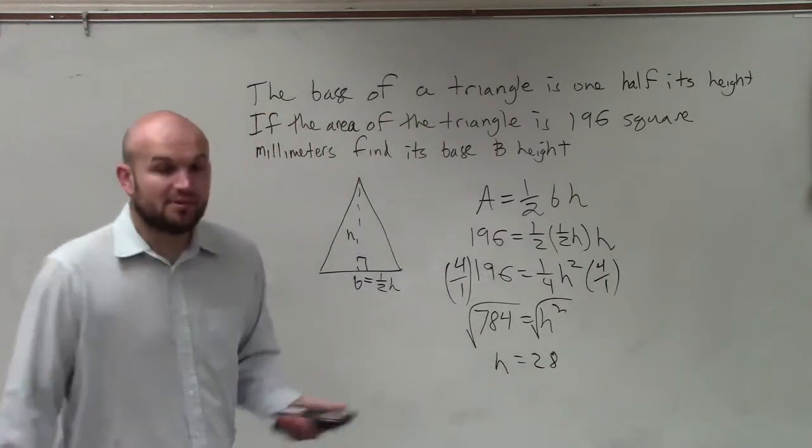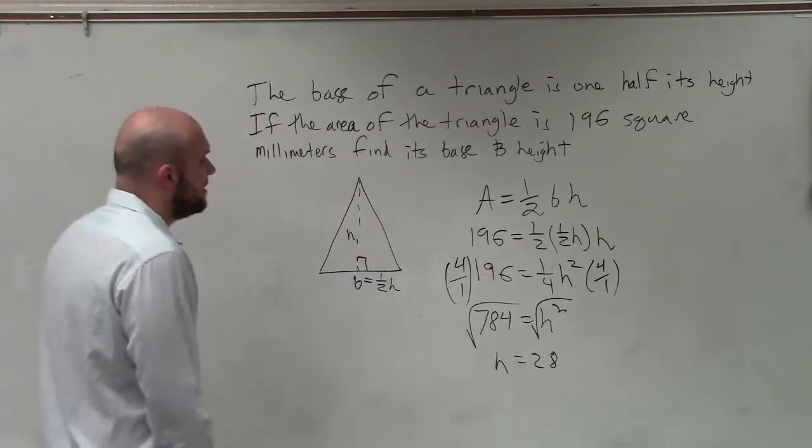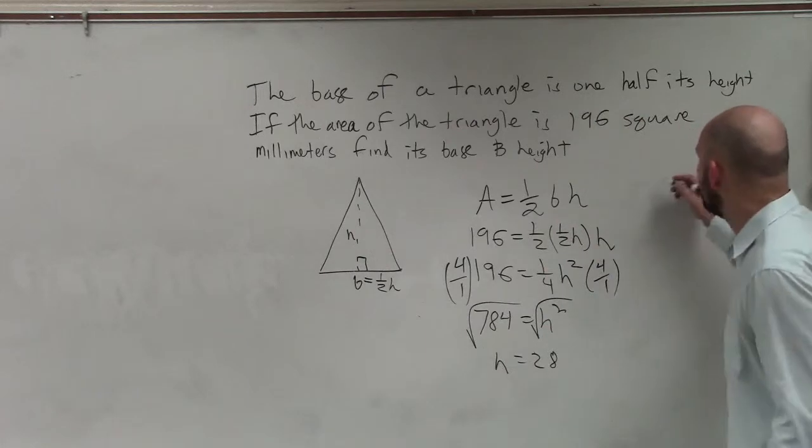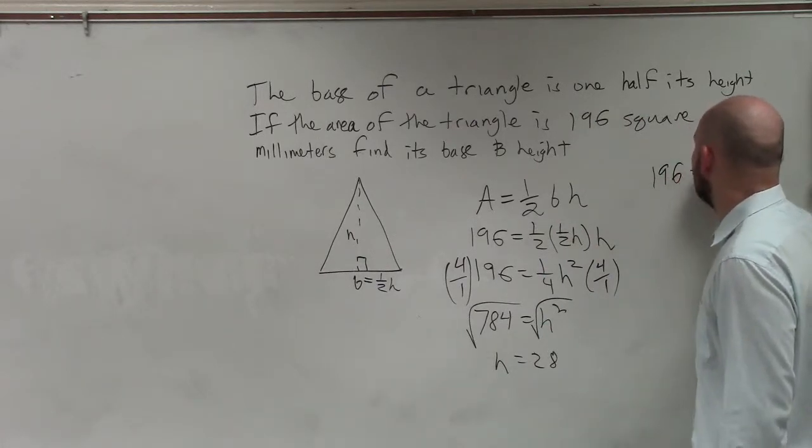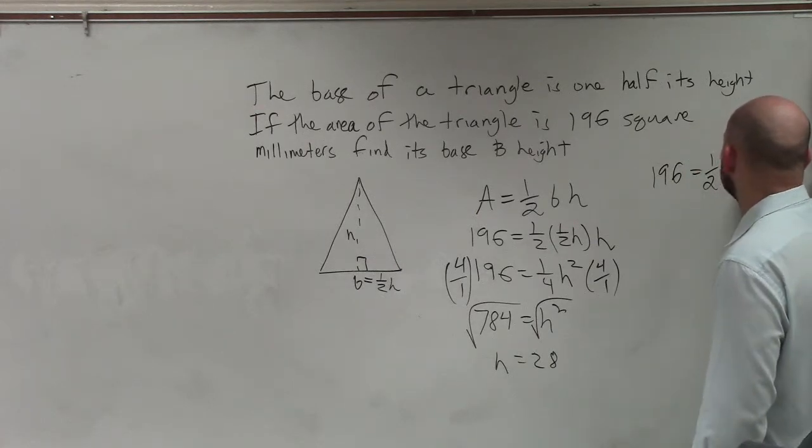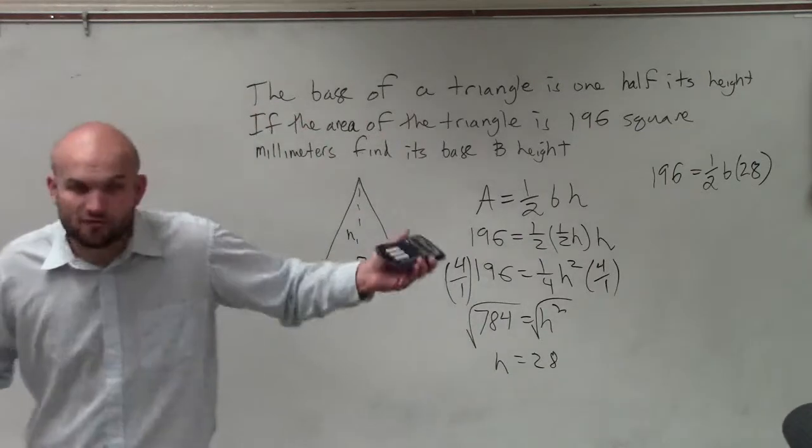Okay? Now, you might say, oh, you know, are we done yet? Well, they said find the base as well. So again, we go back to our formula and say, well, I know that 196 equals 1 half the base times the height. Well, now I know the height is 28. So do we now have enough information that we can plug all this in and solve for b?